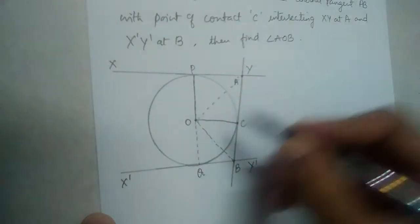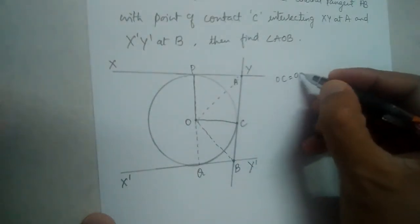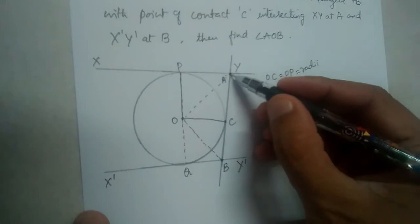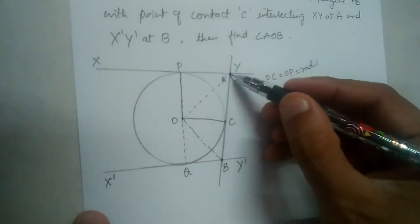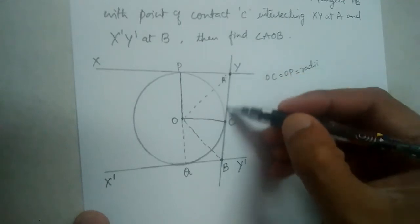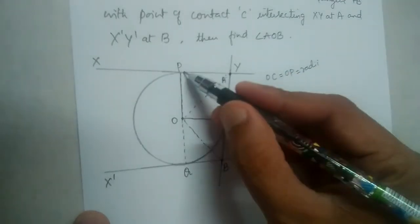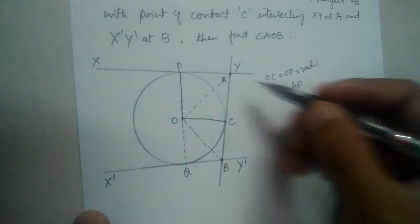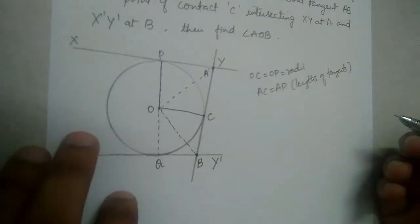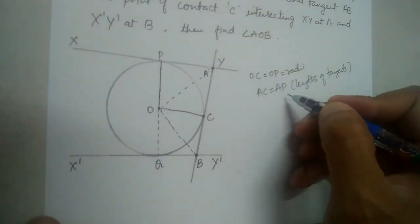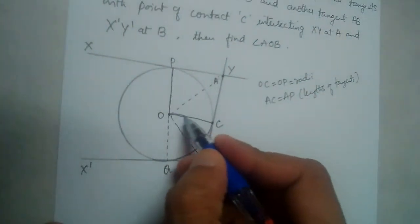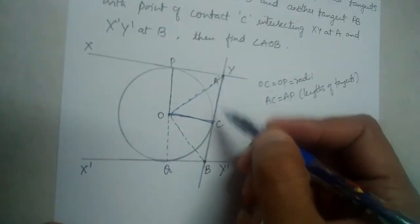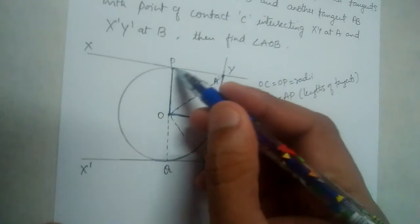OC is a radius, so OC equals OP because both are radii. Point A is outside the circle, which means AC is a tangent and AP is also a tangent. So AC will be equal to AP, since the lengths of tangents from a point outside the circle are equal. Now consider two triangles OAC and OAP.